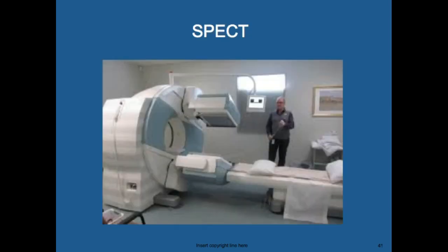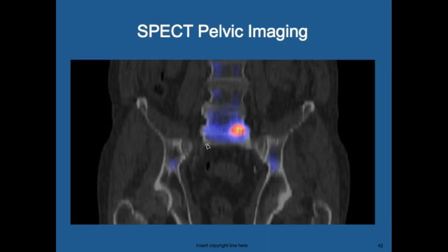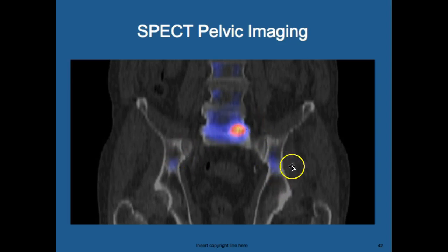In a SPECT camera, the patient slides in and the camera rotates around them and also moves within the scanner. Here's an example of SPECT pelvic imaging — you can see the CT scan and the hot spot within the patient from the nuclear medicine scan.